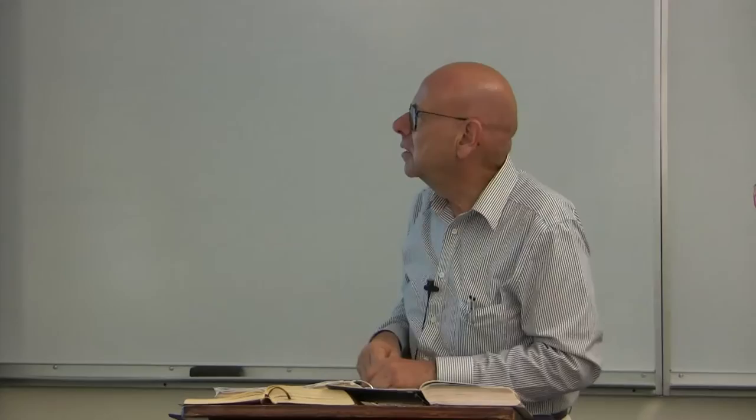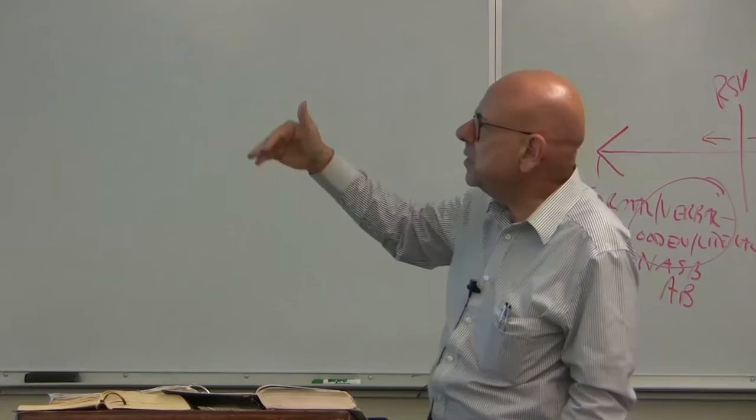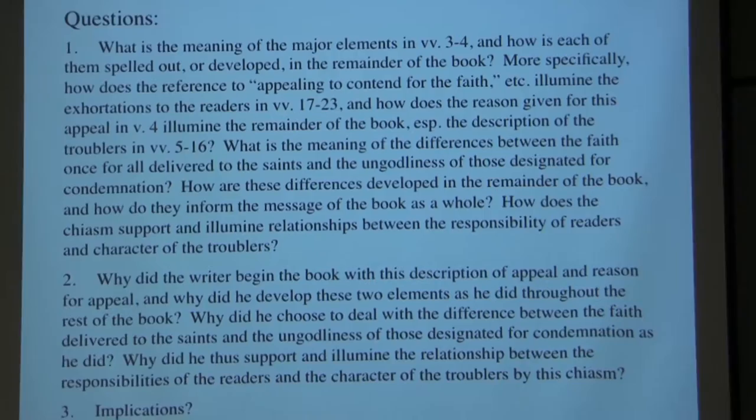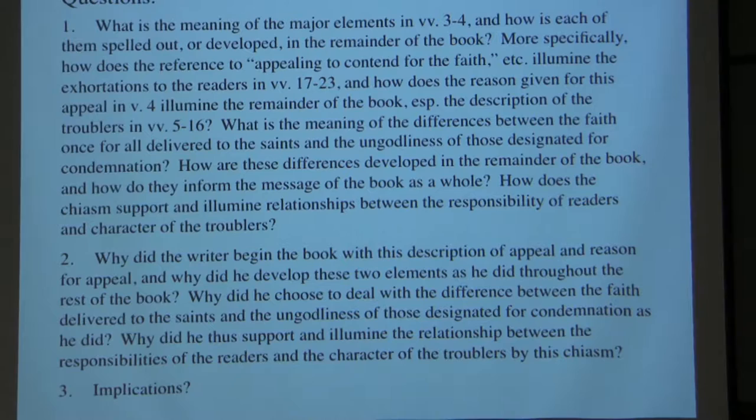Again, how are these differences developed in the remainder of the book — picking up on the particularization — and how do they inform the message of the book as a whole? How does the chiasm support and illumine relationships between the responsibility of readers and the character of the troublers?